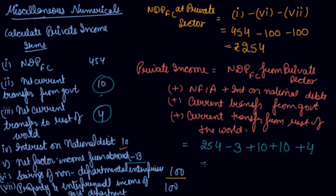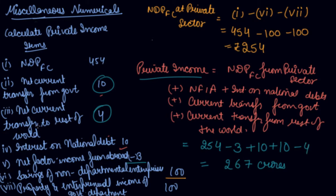So you get an answer of 267 crores as your private income. However, we made a small mistake: the current transfer from the rest of the world is minus 4, because this amount is paid to the rest of the world, meaning you have paid it, so it will be subtracted. Therefore, 267 crores will be your answer for private income.